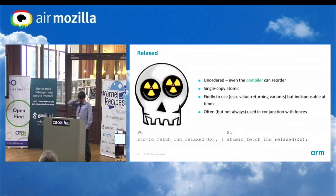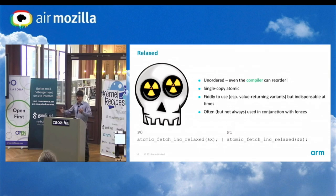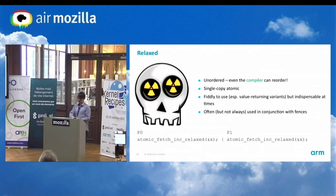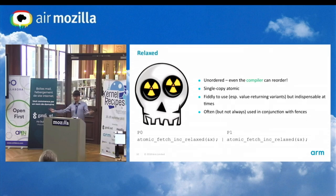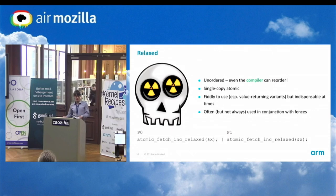Here's a relaxed-looking kind of example. Relaxed atomics are actually quite hard to use — they're unordered, so even the compiler can move these things around; you really can't do any synchronization with relaxed on their own. They are single-copy atomic — indivisible, you can't see them tearing. Often you use them in conjunction with fences. In this example, two CPUs do atomic_fetch_inc_relaxed on a shared variable initialized to zero. At the end, the variable will be two, and one CPU gets zero and the other gets one back — that's about all you can say about that program.